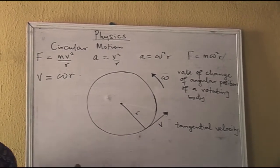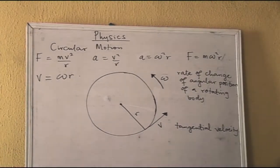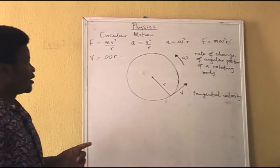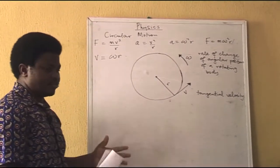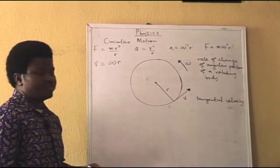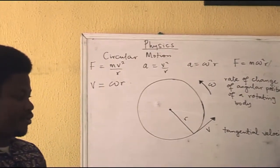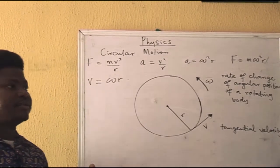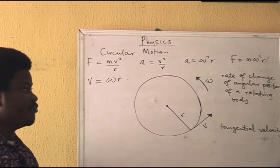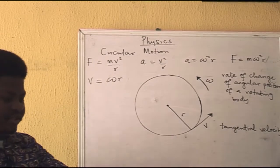Welcome to our physics class. The topic of concern today is circular motion. It is actually a very broad aspect of mechanics in physics, but we just want to identify a portion today, and in our next class we will look at other portions. Circular motion, as the name implies, is the movement of an object in a circular form. We have some physical entities in our environment that move in that manner.